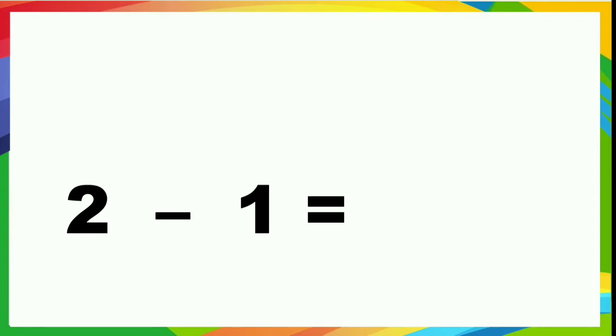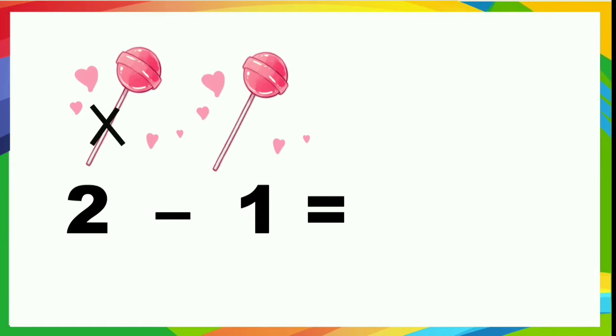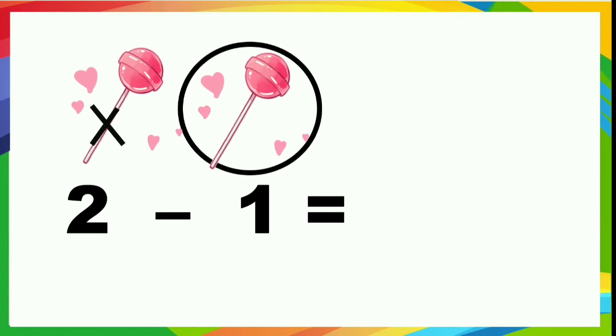2 minus 1. What are these? Lollipops. Yes. How many lollipops are there? 2. If you have 2 lollipops and you gave 1 lollipop to your friend, how many left with you? Count children, how many left? 1. Yes. So, 2 minus 1 is equal to 1.